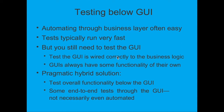Testing below GUI: automating through the business layer is often easy because you just keep passing functions and you know the output since the business validation is already known. Tests typically run very fast, but you still need to test that the GUI is wired correctly to the business logic, as the UI and business logic must be in sync. GUIs always have some functionality of their own which should also be covered. There is also a pragmatic hybrid solution: test overall functionality below the GUI, with some end-to-end tests through the GUI to ensure everything is covered from start to end.